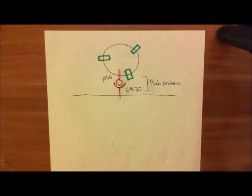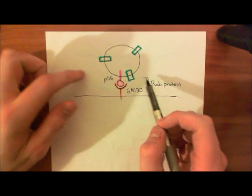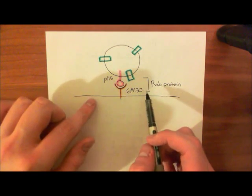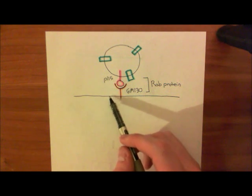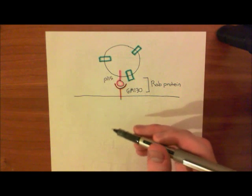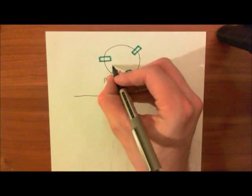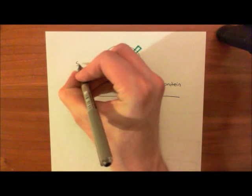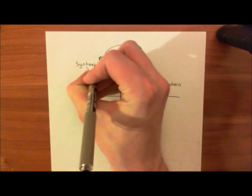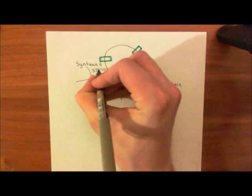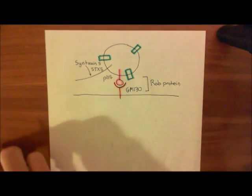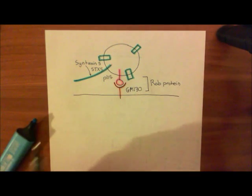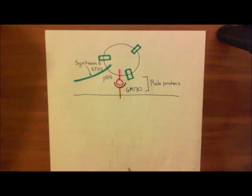It's slightly different to the synaptic case. In the synaptic case, you have one SNARE in the membrane of the vesicle and two SNAREs in the membrane of the target. In this case, you only have one SNARE in the membrane of the Golgi and three SNAREs in the vesicle. Let's start with the SNAREs in the vesicle. The first one is Syntaxin 5, often abbreviated to STX5.